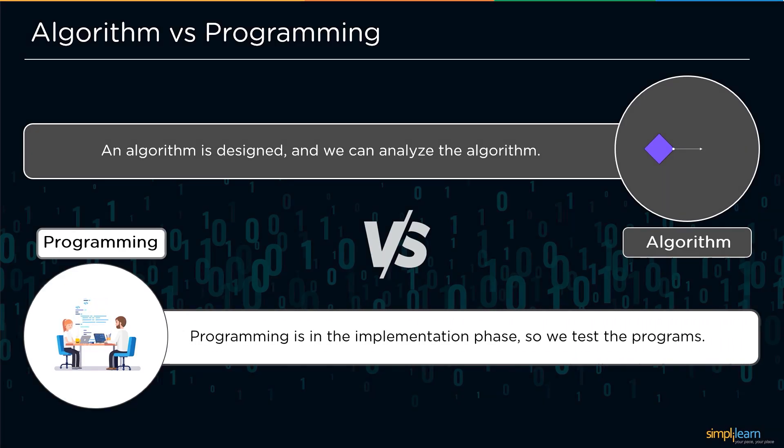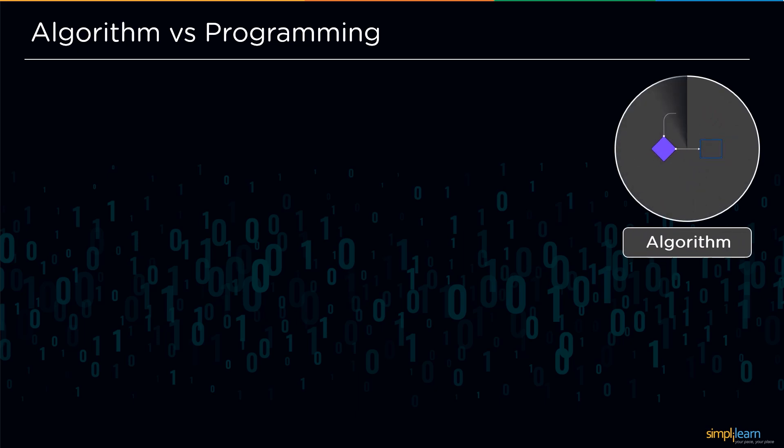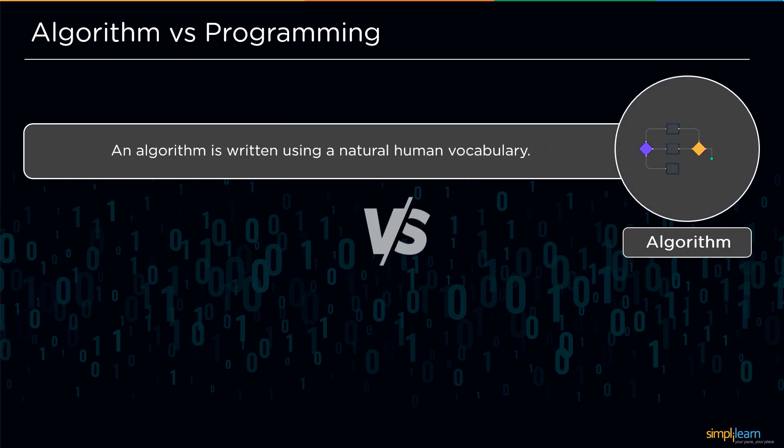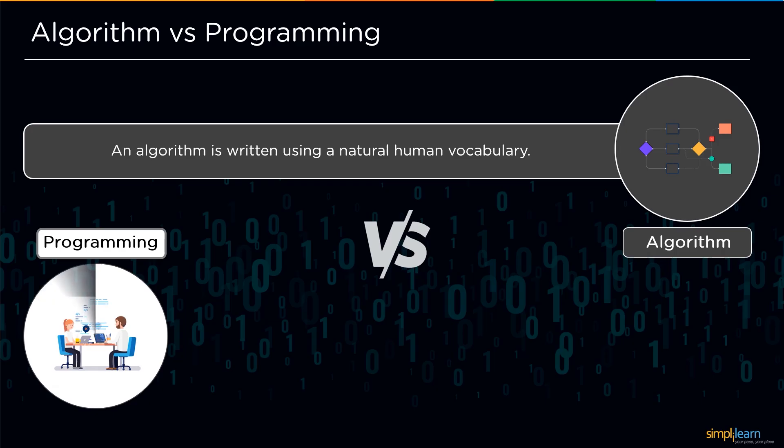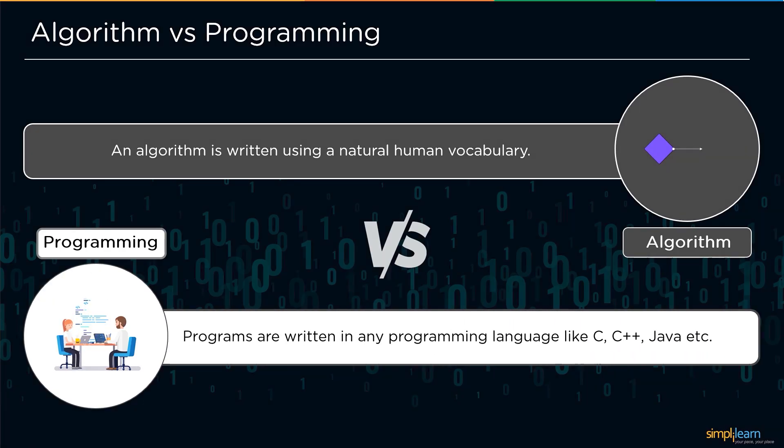So the fourth and the last difference between an algorithm and programming is: an algorithm is written using natural human vocabulary, whereas programs are written using any programming language such as C, C++, Java, Python, etc.